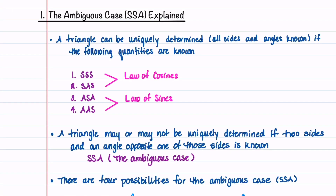I'll start by explaining what the ambiguous case is all about. We can find all the sides and all the angles for all four of these triangles. The law of cosines can be used to solve the first two triangles, and the law of sines can be used to solve the next two. For a SSA Triangle — a triangle where two sides and an angle opposite one of those sides is known — all the sides and angles may or may not be able to be found. This is why it's called the ambiguous case.